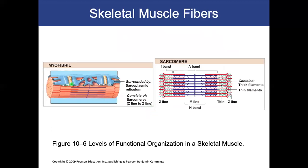The T-tubule and sarcoplasmic reticulum surround a myofibril, which is a repeating pattern of sarcomeres. A sarcomere is the smallest functional contractile unit of skeletal muscle, defined as Z-line to Z-line. The Z-line is where actin anchors, so the red thin filaments come off the Z-line. The M-line is the anchor for myosin, so myosin (the purple thick filament) comes off the M-line.